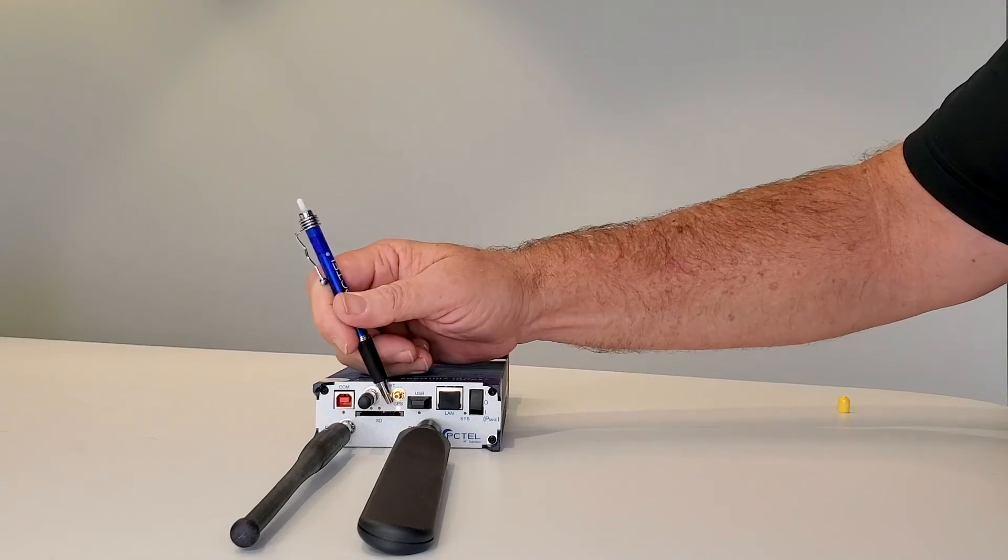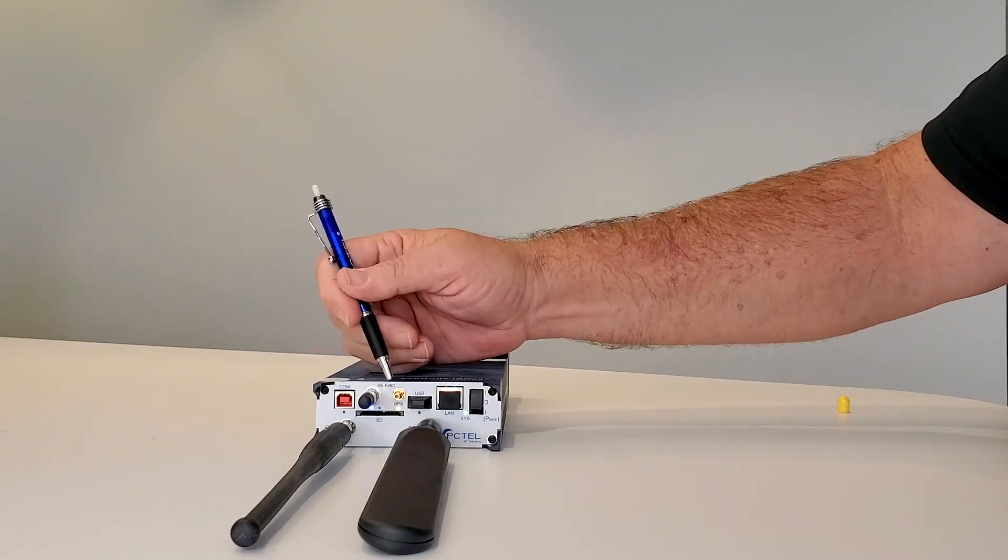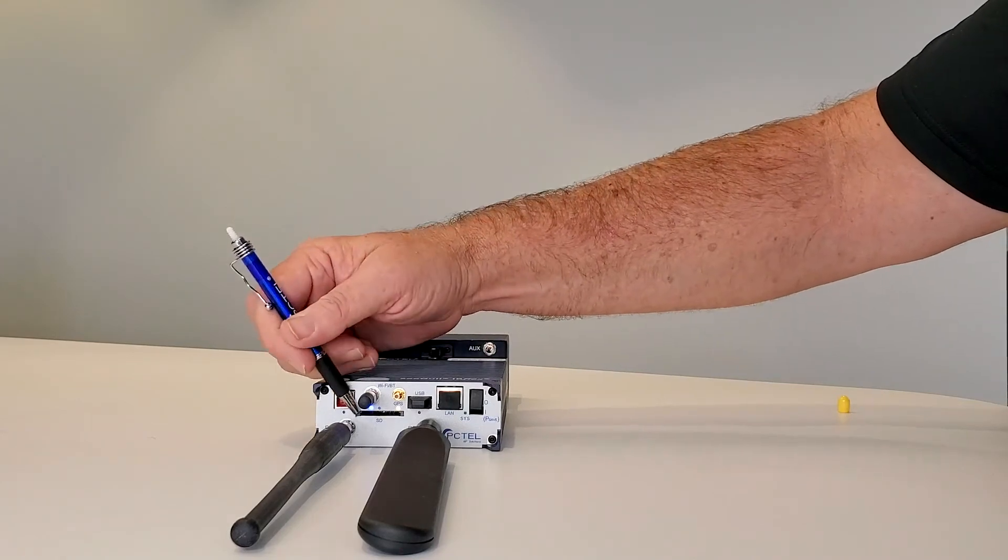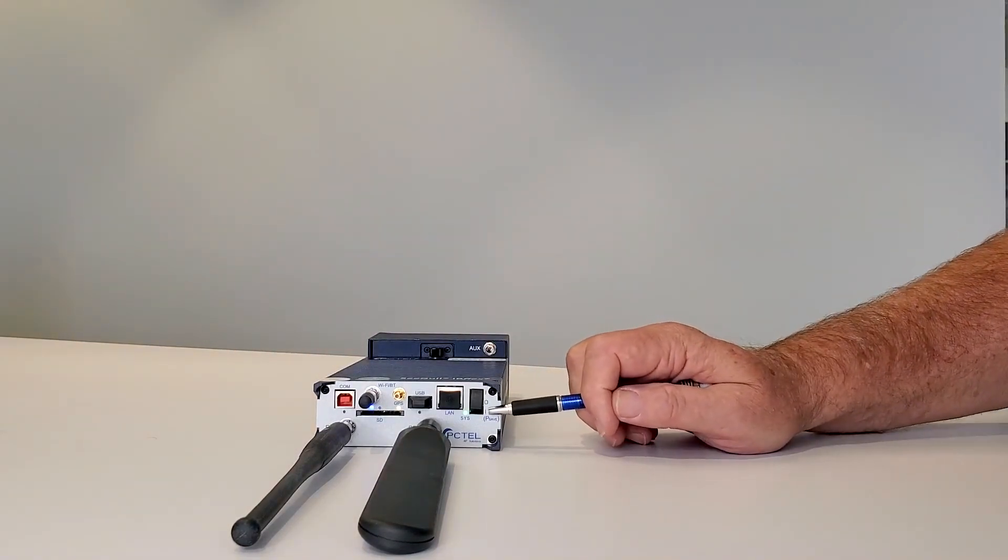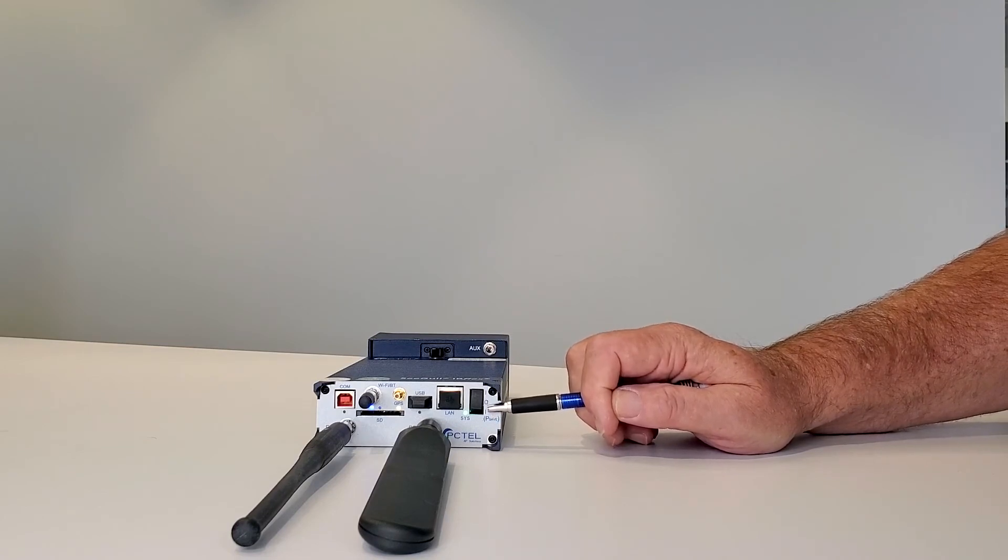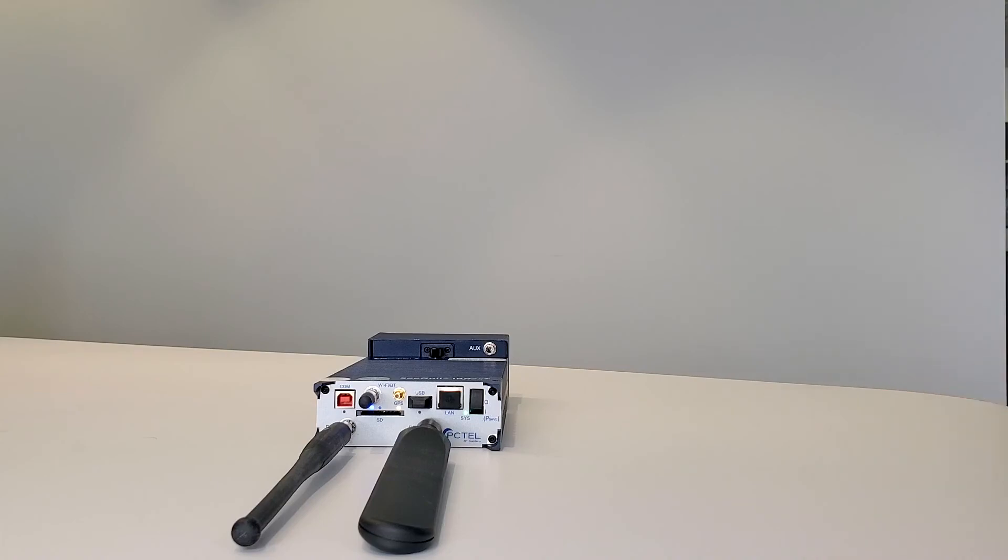We're also going to see a light for our GPS which will stay yellow because we're not using a GPS for in-building testing. And we also have a Bluetooth light. Now, if your system status light is any other color than green, please contact our support. Once it's solid green, your scanner is ready for use.